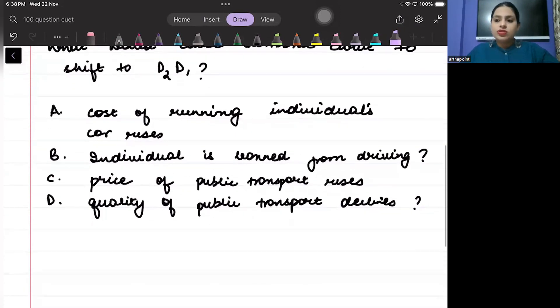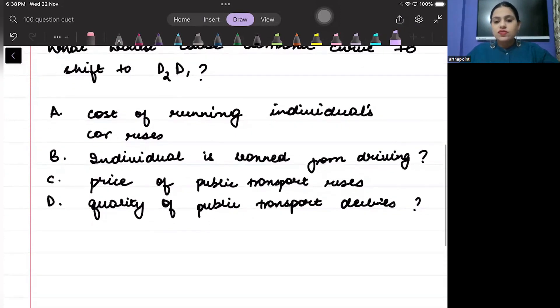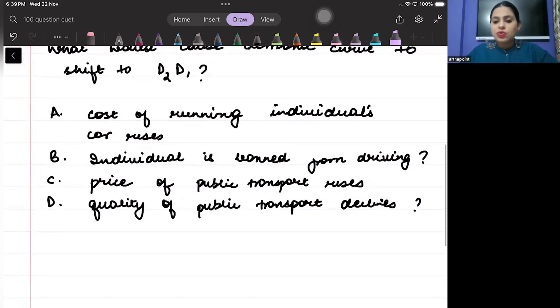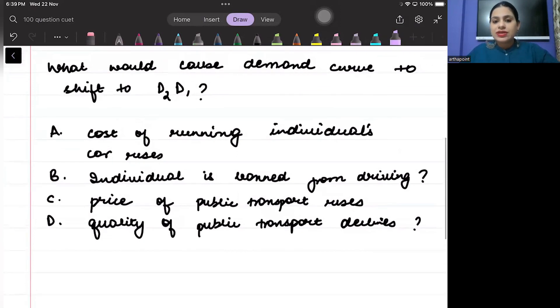And then four options are given to us. A: Cost of running the car rises. B: Individual is banned from driving. C: Price of public transport rises. D: Quality of public transport declines.